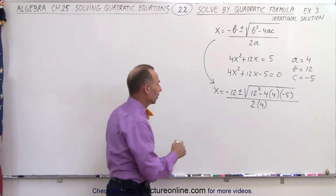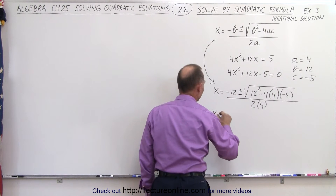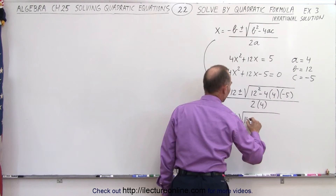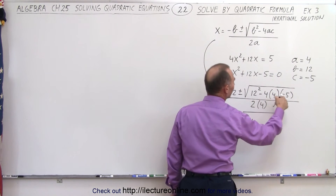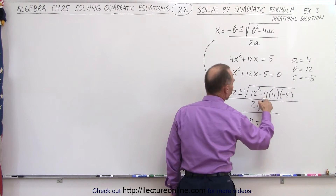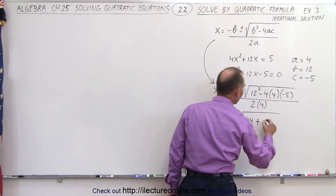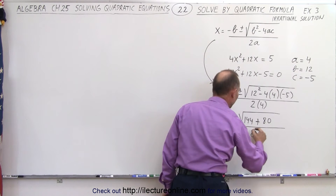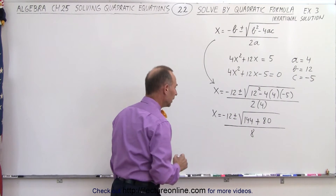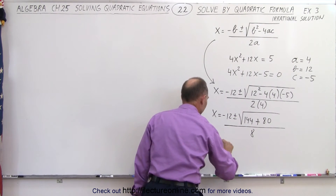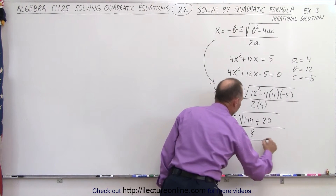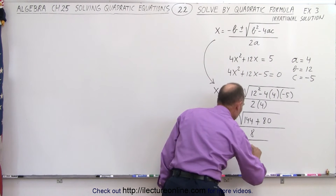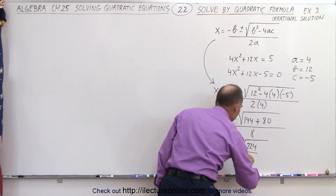Now we simplify one step at a time. x = −12 ± √(12²), which is 144. Notice minus times a minus makes that a plus: 4 × 4 = 16, times 5 = 80, all divided by 2 × 4 = 8. That gives us x = −12 ± √(144 + 80) = −12 ± √224, all divided by 8.